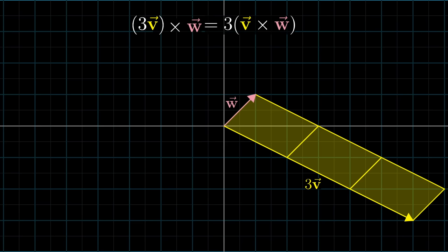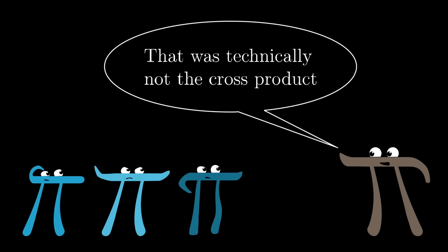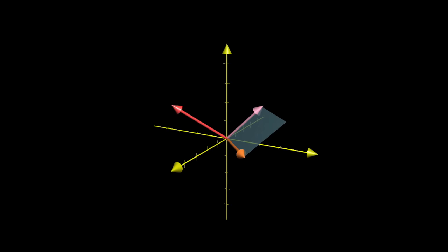Now even though all of this is a perfectly fine mathematical operation, what I just described is technically not the cross product. The true cross product is something that combines two different 3D vectors to get a new 3D vector.